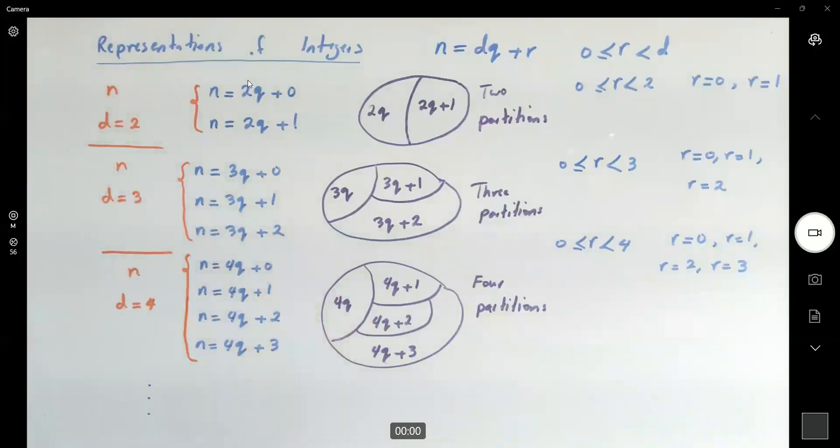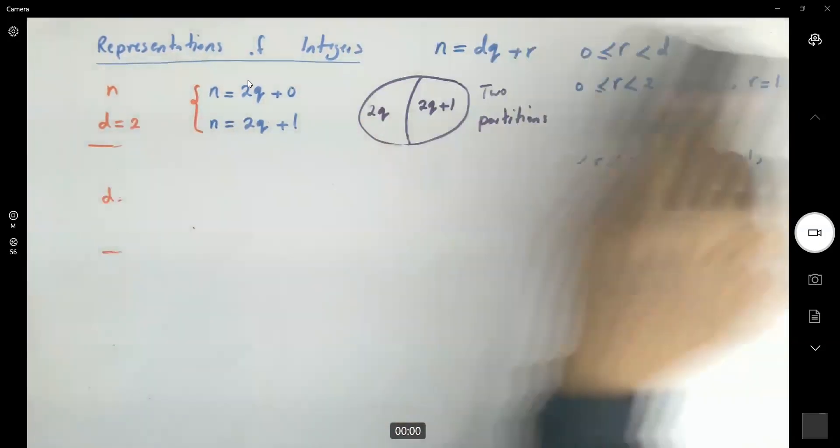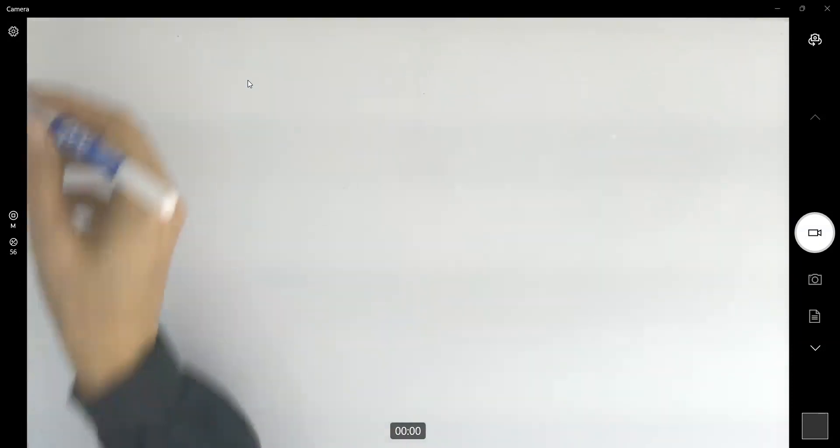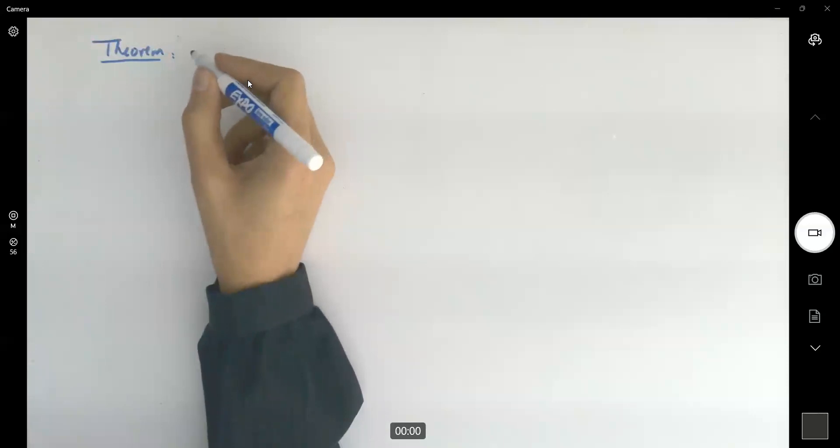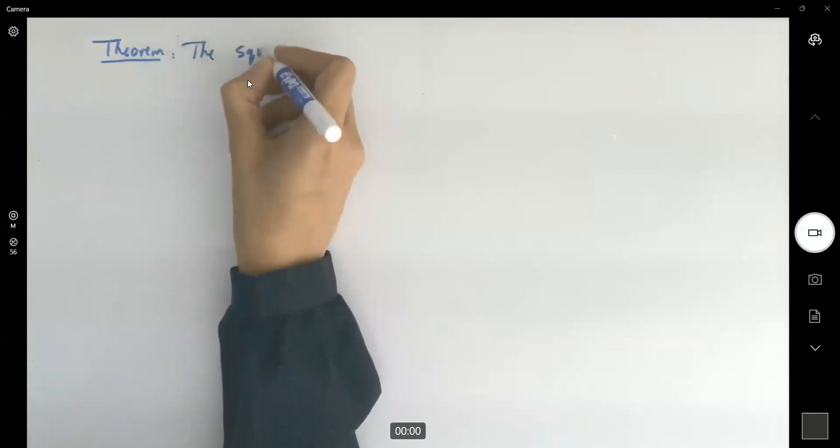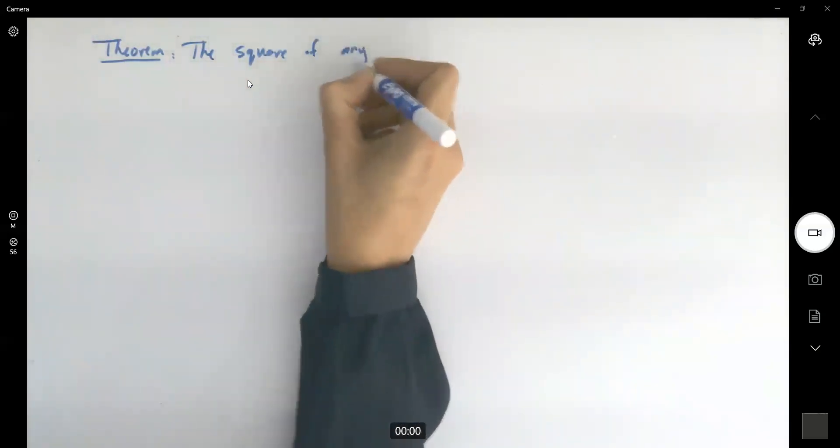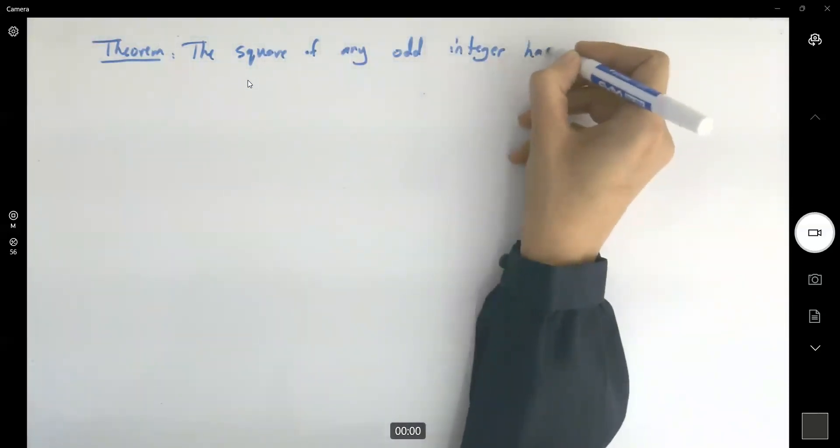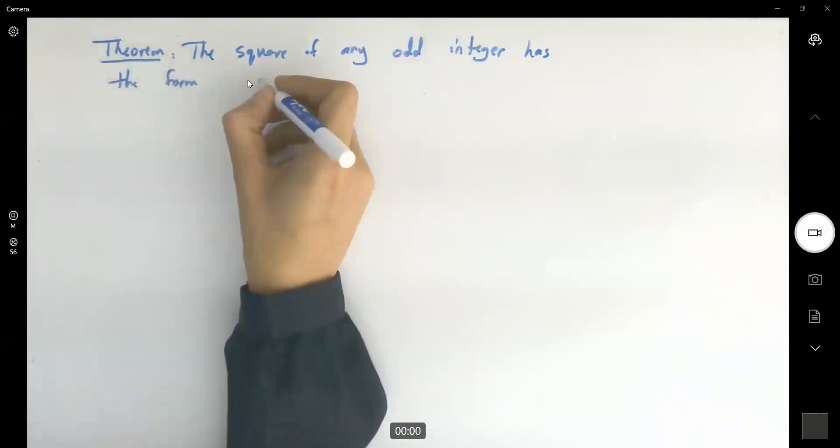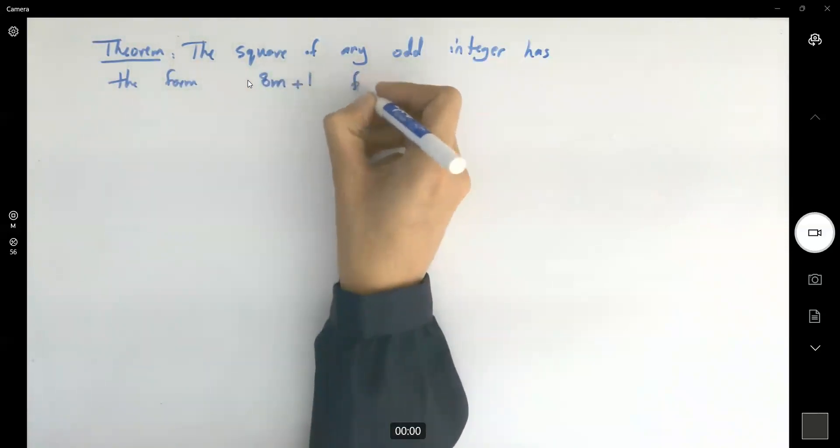Now we'll see the application of these guys in a theorem. Take a look at the following. This theorem says the square of any odd integer has the form 8m plus 1 for some integer m.